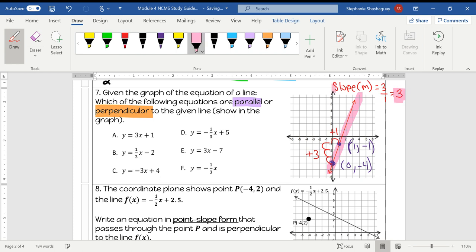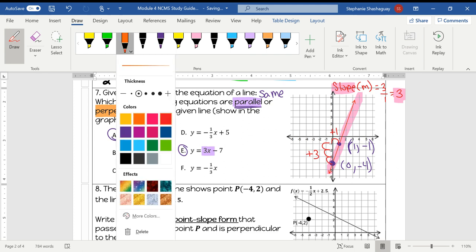If my slope of this line is 3 and I'm looking for things that are parallel, parallel means that I have the same slope. So of these equations, the ones that have the same slope are A and E. So I'm going to select A and E because those two are parallel.